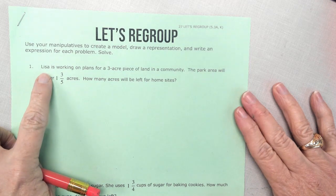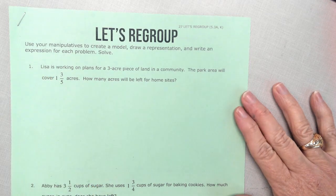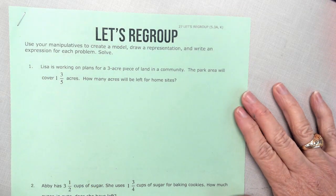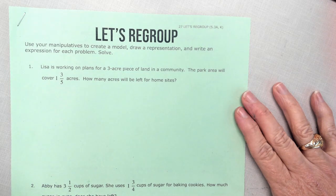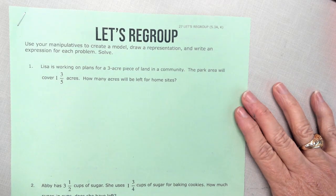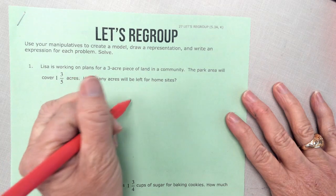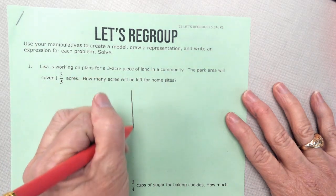Let's start with number one. Number one says: Lisa is working on plans for a three-acre piece of land in the community. The park area will cover one and three-fifths acres. How many acres will be left for home sites?